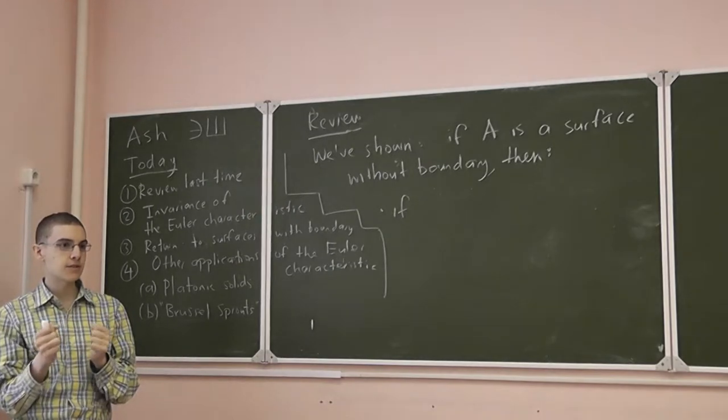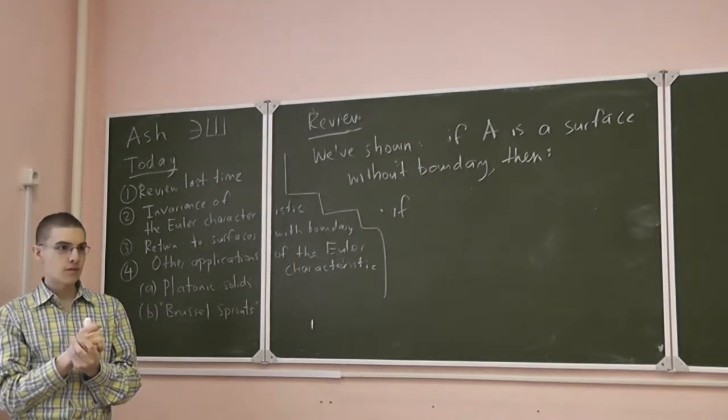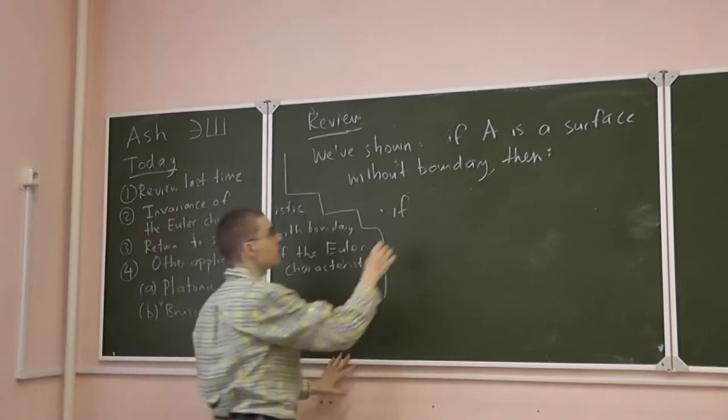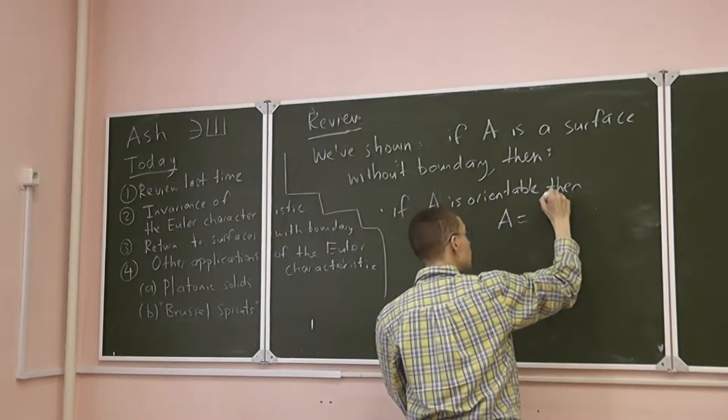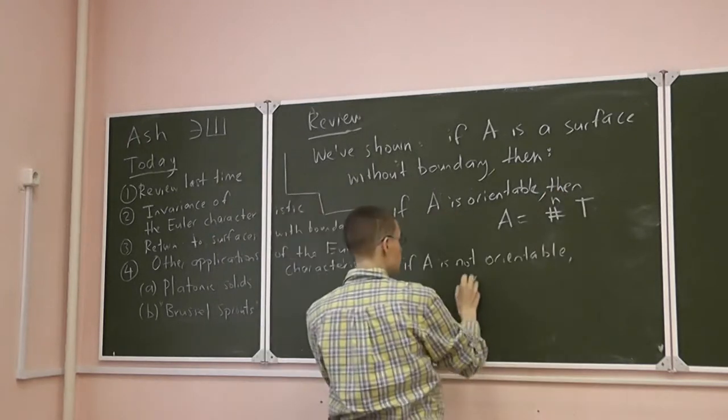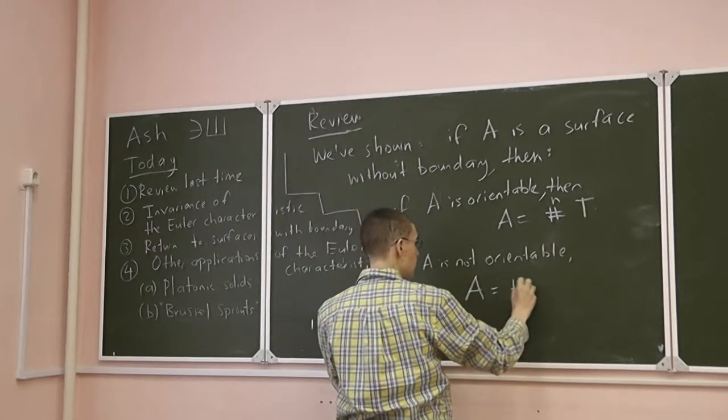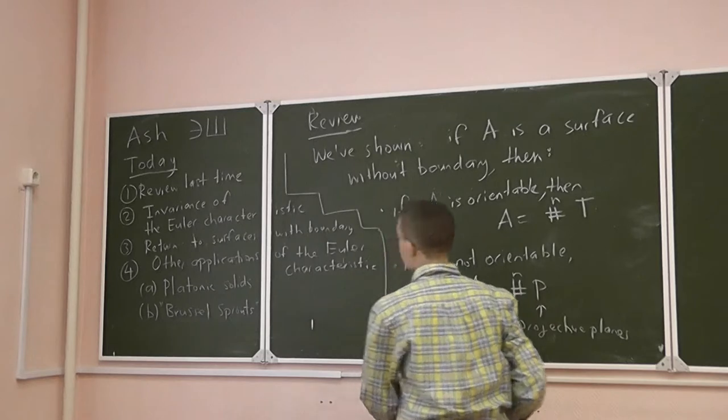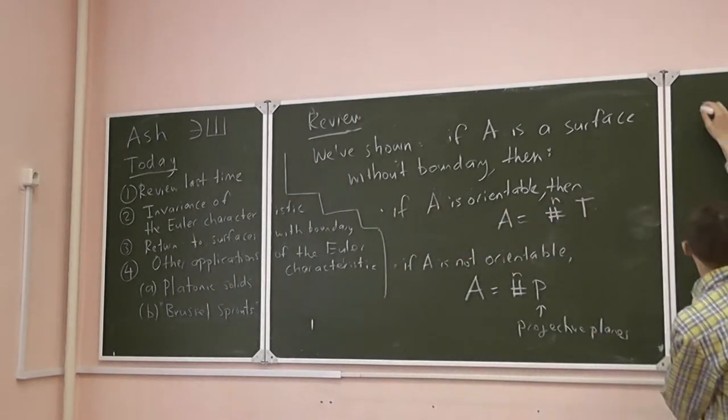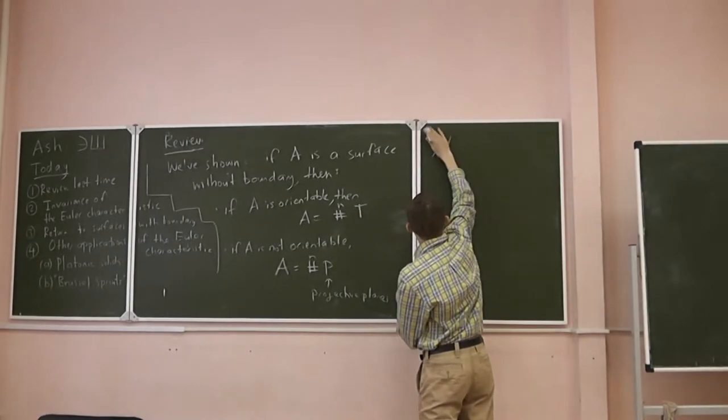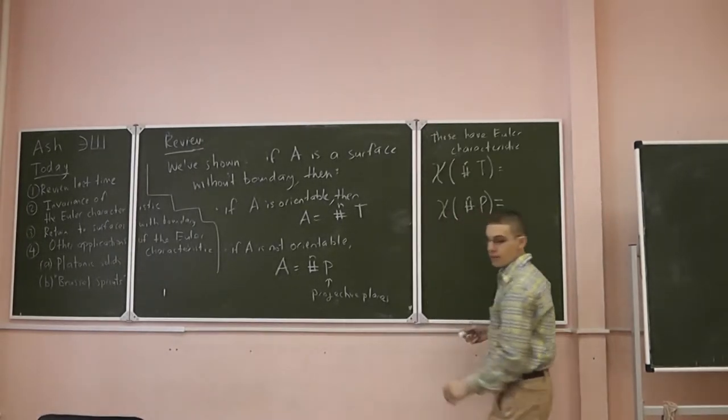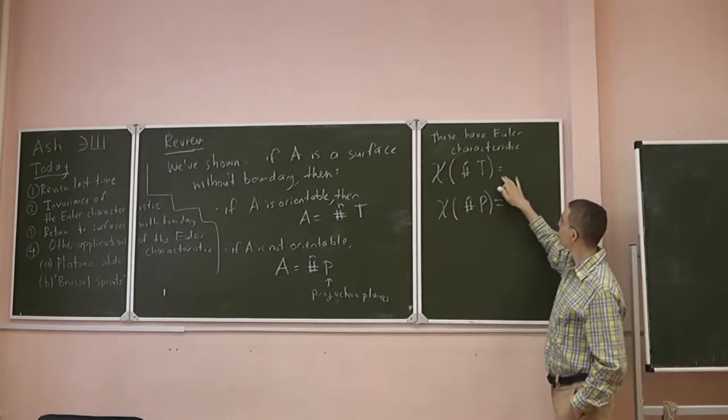It's either orientable or not orientable. One is orientable and one is not. So if A is orientable, this is a connect sum of tori. Otherwise A is a connect sum of projective planes. And last time we were looking at computing the Euler characteristics for these.